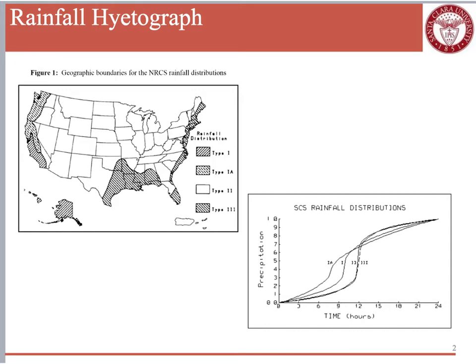The reason normalization is helpful is that it allows us to look up normalized rainfall distributions. If we know how much total rainfall fell in a particular storm, we can estimate the distribution of that rainfall during the storm. The NRCS — the National Resource Conservation Services, part of the USDA — has these distributions available based on geographic location. Santa Clara is a Type 1 rainfall distribution.